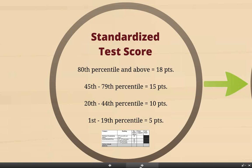Once you break out these subcategories, these become the talking points — where did the student lose points? You can see there's a big difference between 18 points and 5 points on a 100-point scale, but there's still a lot of time to recover.